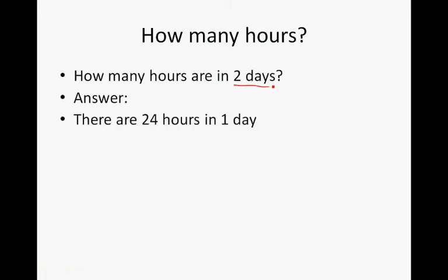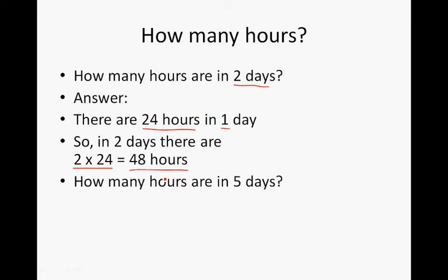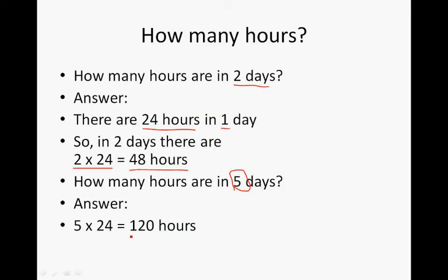How many hours are in two days? In one day there are 24 hours, so in two days there are two times 24, which equals 48 hours. How many hours are in five days? One day equals 24 hours, so five times 24 is equal to 120 hours.